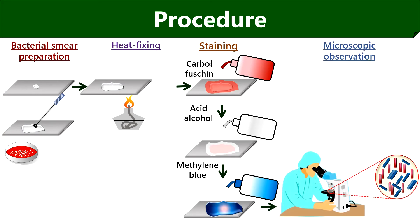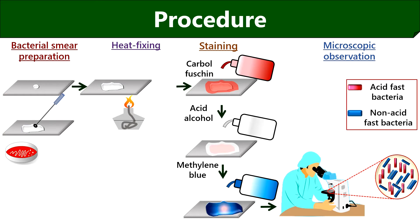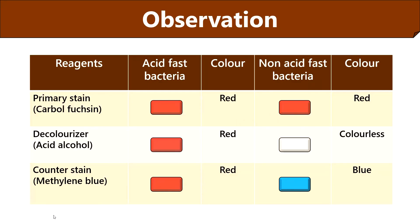Now observe the glass slide under the microscope. You can add a drop of oil immersion to the colored specimen and observe under the 40x objective. On microscopic examination, you can see red colored acid fast bacteria appearing as a bunch of sticks, and blue colored non-acid fast bacteria. In the observation table, the acid fast bacteria do not lose the color of the primary stain throughout the staining procedure, whereas the non-acid fast bacteria lose the primary stain color, become colorless after treatment with acid decolorizer, and finally take up the counter stain, appearing blue in color.